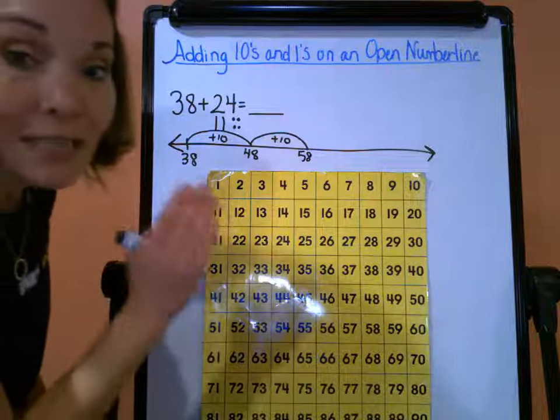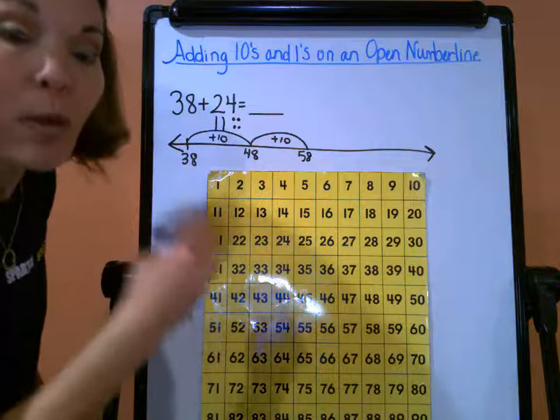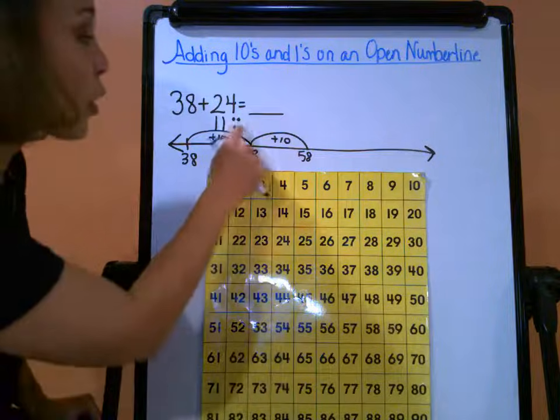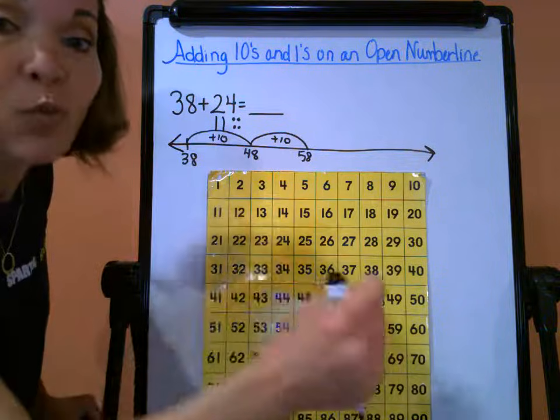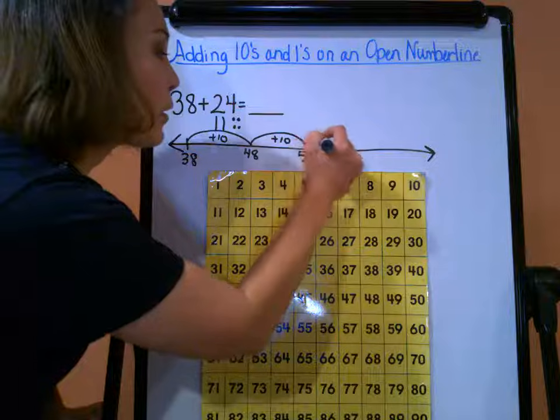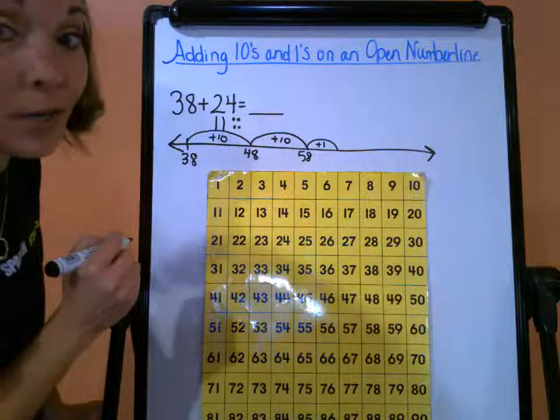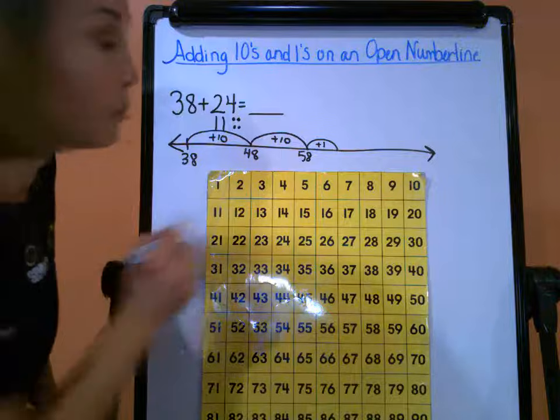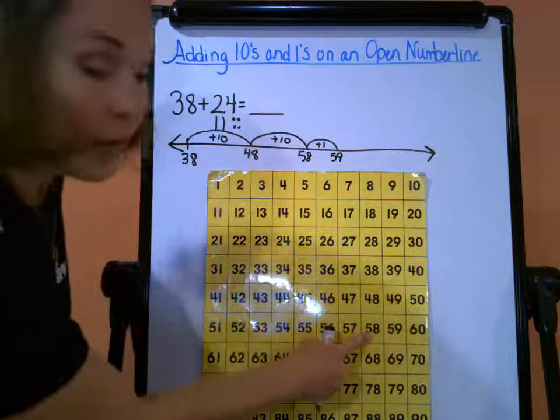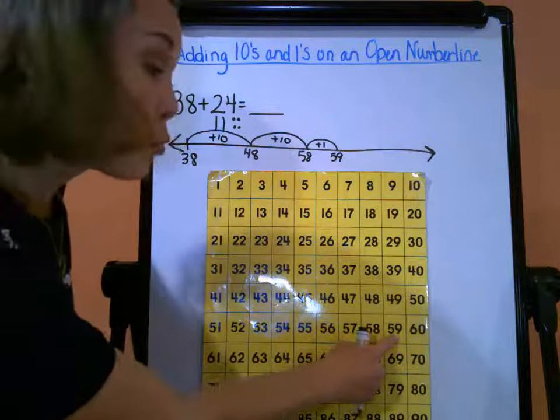But we're not done yet because we still have to do the ones. My ones are going to be those little hops, and since there are four ones, I want to do four little hops. Okay, so 58 plus one more is going to give me, easy peasy, 59. And when you're on the hundreds chart, you're going to now move to the right because you're only adding now by one, we're not going in increments of ten at this time.